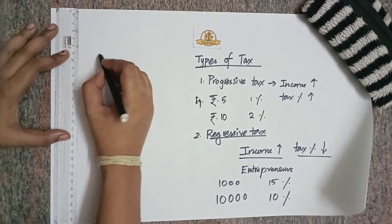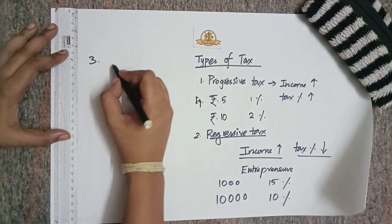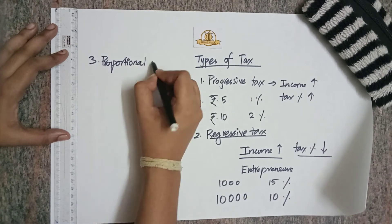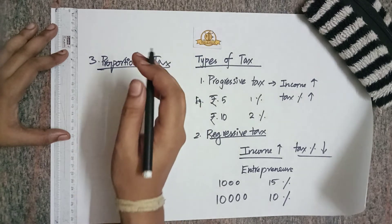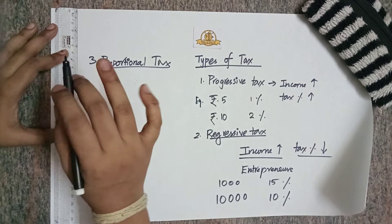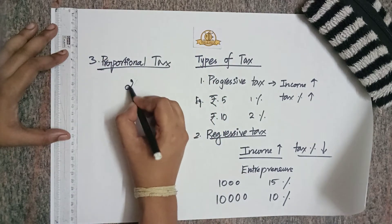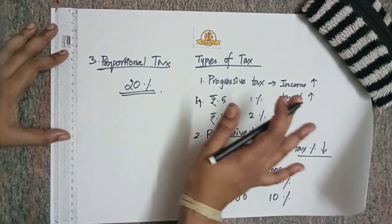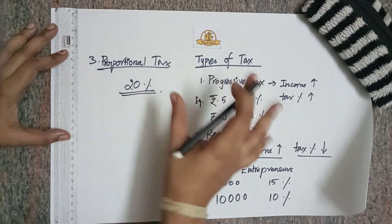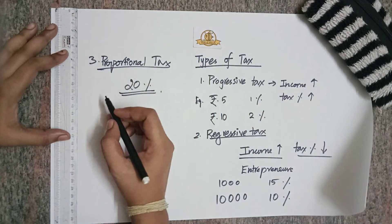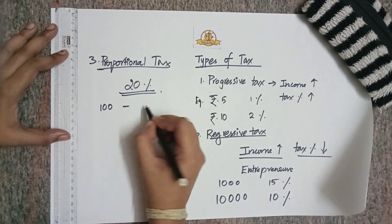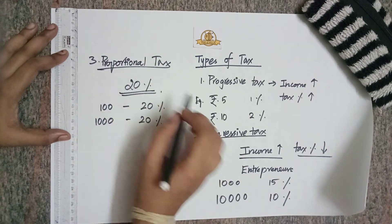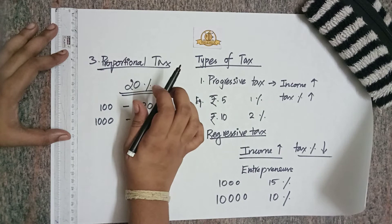The third type is proportional tax, in which there is a flat tax rate for all. Say the tax percentage is 20% — this 20% will be collected from all persons irrespective of income. So income is not used here for calculating the tax. Whether you are earning rupees 100 or rupees 1,000, your tax percentage remains 20%. Tax percentage is not dependent on income in proportional tax.